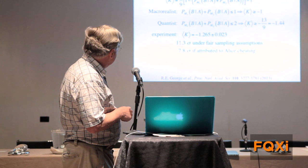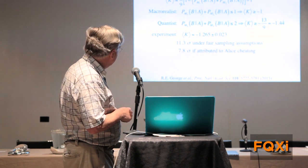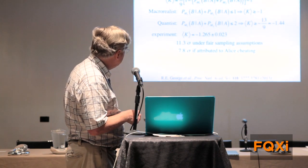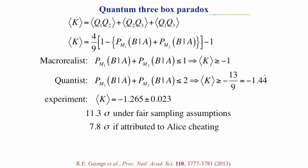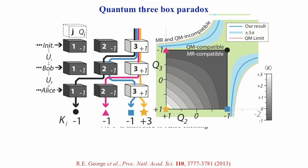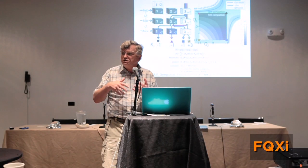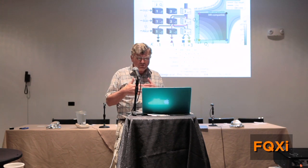The point is that this violates the macro realist assumptions by over 11 standard deviations if you assume fair sampling, and still over nearly eight even if Alice is cheating, which corresponds to that venality I was talking about in the previous experiment. We can recast that in terms of the Leggett-Garg inequality. Here are the various different pathways. This square is the bound of what would be allowed by macro realism, and the blue curves represent the values of K that we actually got in our experiments. You see, one's pushing further the extent to which one can test these foundational concepts in actual experiments.